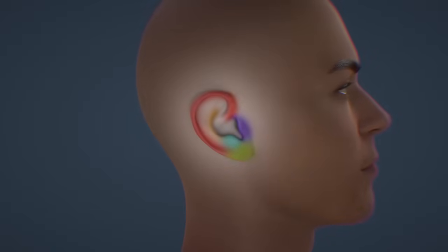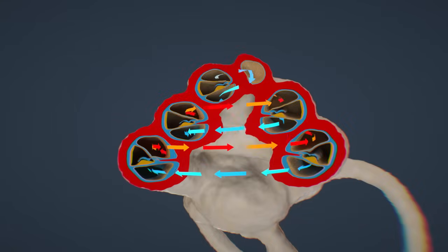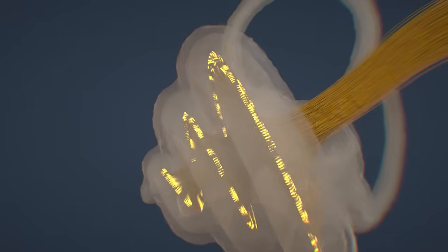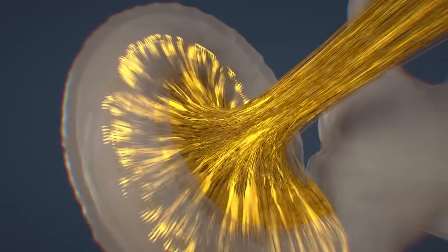The ear, a part of our body that serves as both a sensory organ and an organ of balance. In this first part of the video series, we show how we can hear with our ears.